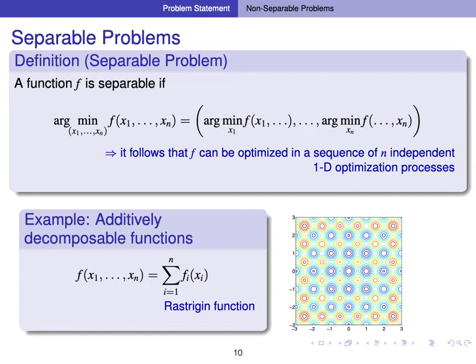Before describing the next difficulty, we introduce the definition of separability. A function is separable if the solution to the minimization problem of n variables consists of solutions to n single-variable problems. An example of separable functions is an additively decomposable function, which is a sum of n single-variable functions. If a function is separable, we can optimize it by optimizing n independent one-dimensional problems. Therefore, if we can assume separability of the problem, we can avoid the curse of dimensionality.